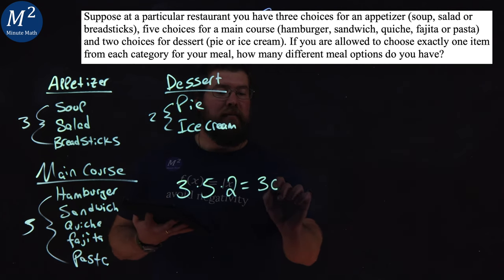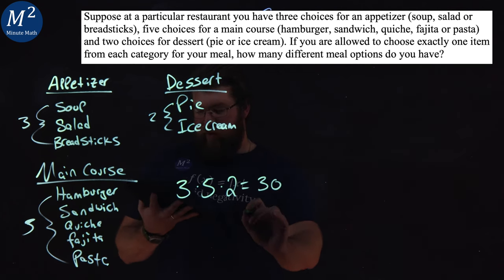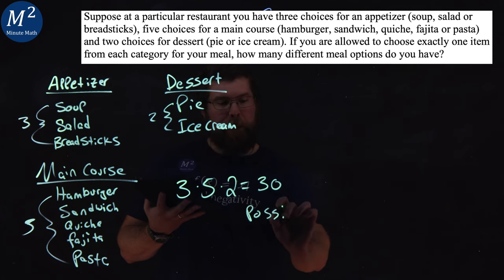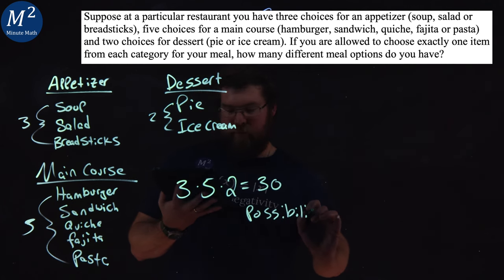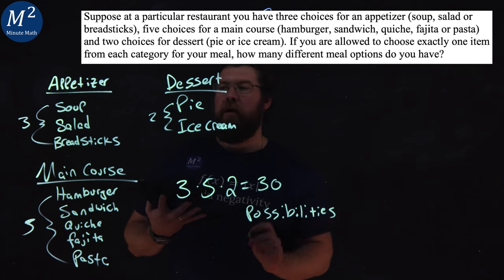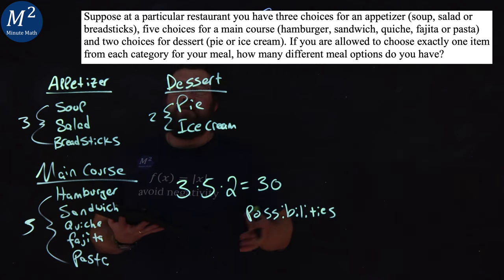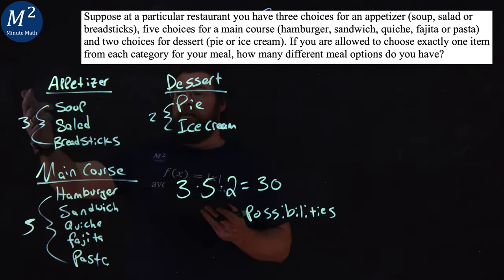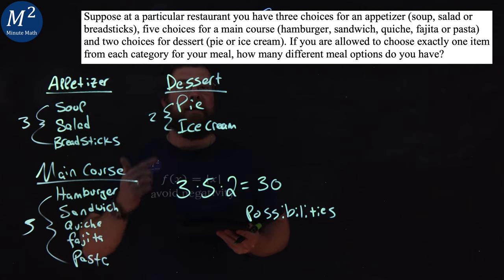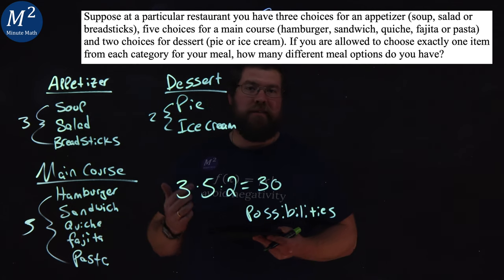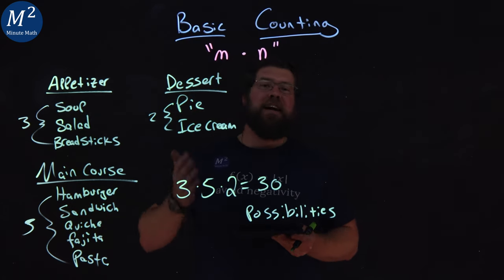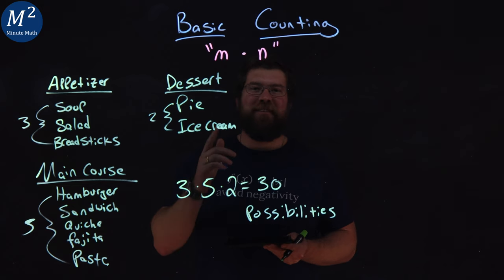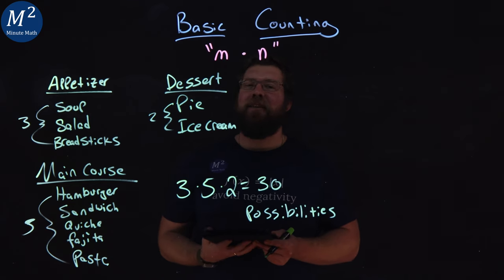There are three options for appetizers, multiplied by five options for the main course, multiplied by two options for dessert. We multiply that out and we get 30. So there are 30 possibilities to select one appetizer, one main course, and one dessert. I hope you learned something here about basic counting, and as always, thanks for watching.